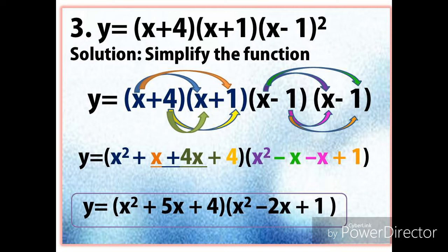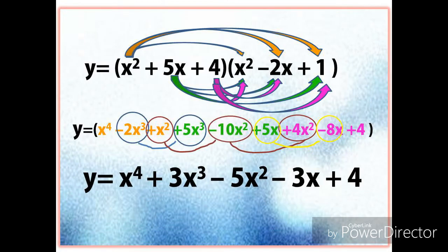The new equation becomes Y equals (X squared plus 5X plus 4) times (X squared minus 2X plus 1). We combine like terms: X plus 4X is 5X, and negative X minus X is negative 2X. Continuing to apply the distributive property and combining like terms, we get Y equals X raised to the 4th plus 3X cubed minus 5X squared minus 3X plus 4.